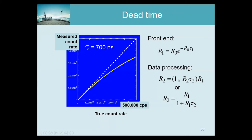Computing r₂ from this expression shows that if r₁ is small compared to τ₂ the system is always ready and r₂ equals r₁. If r₁ is very large, r₂ approaches 1/τ₂ — the maximum count rate. If the system can process 100,000 photons per second and you give it a million, it will process 100,000 and discard 900,000. This behavior is called non-paralyzable — the system does the best it can and saturates at a maximum.